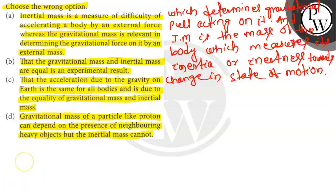As per the principle of equivalence, gravitational mass is equal to its inertial mass and is independent of the presence of neighboring heavy objects. Hence, statement D is incorrect. So option D is the correct answer.